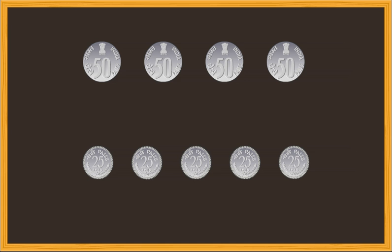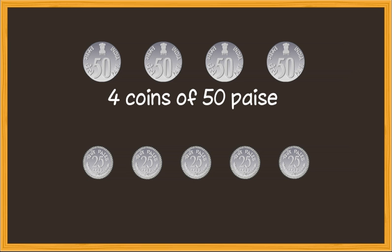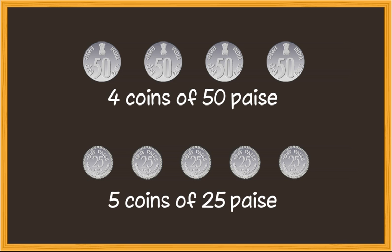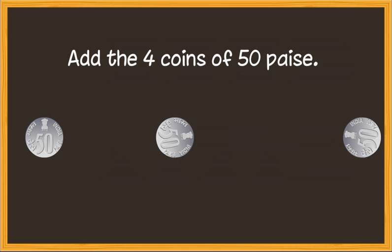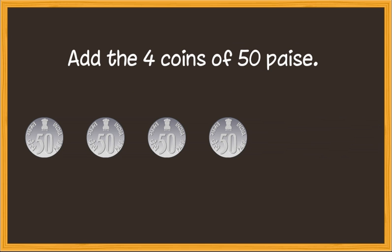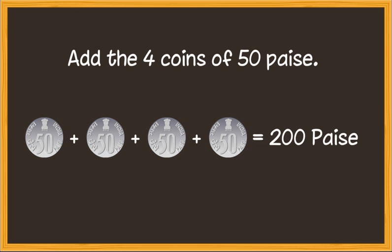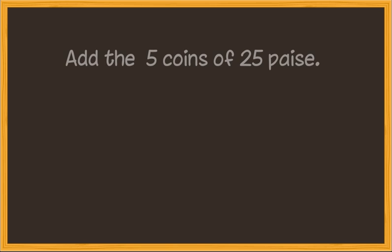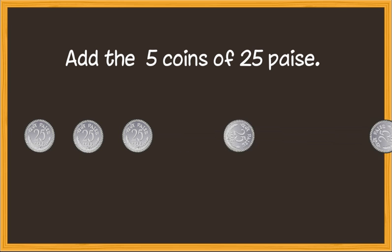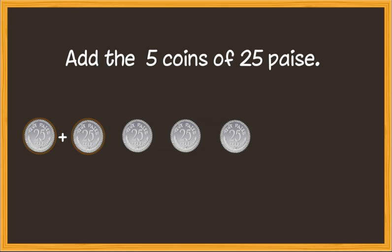He has four coins of 50 paise and five coins of 25 paise. Let's add the four coins of 50 paise: 50 paise plus 50 paise plus 50 paise plus 50 paise is equal to 200 paise. So four coins of 50 means 200 paise.